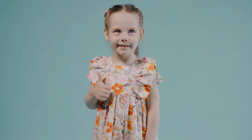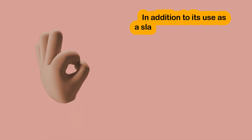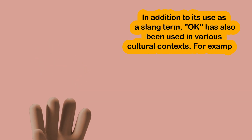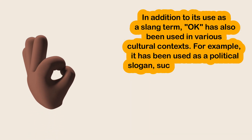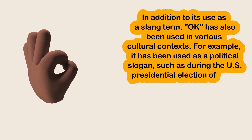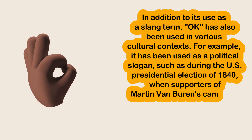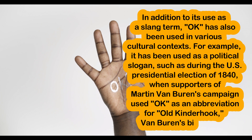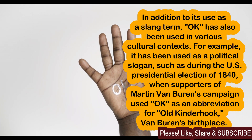In addition to its use as a slang term, OK has also been used in various cultural contexts. For example, it was used as a political slogan during the U.S. presidential election of 1840, when supporters of Martin Van Buren's campaign used OK as an abbreviation for 'Old Kinderhook,' Van Buren's birthplace.